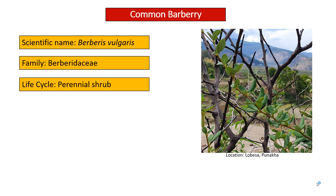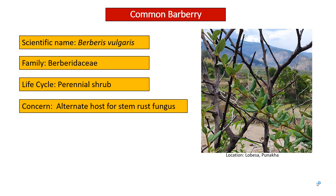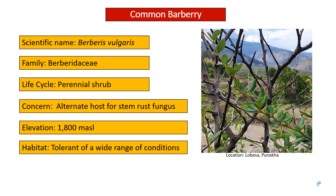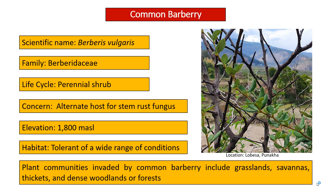Regarding its life cycle or growing habit, it is a perennial deciduous shrub. It is of concern to agriculturists because it acts as an alternate host for stem rust fungus. It occurs at an elevation of 1,800 meters and above sea level. It is tolerant of a wide range of conditions, and plant communities invaded by common barbary include grasslands, savannas, thickets, and dense woodlands or forests.